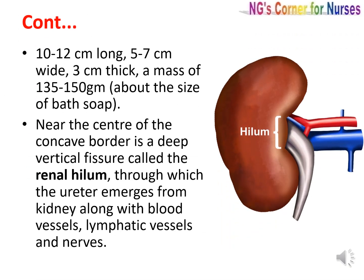The kidney is 10 to 12 cm long, 5 to 7 cm wide, and 3 cm thick, with a mass of 135 to 150 g — about the size of a bar of soap. Near the center of the concave border, there is a deep vertical fissure called the renal hilum, through which the ureter emerges from the kidney along with blood vessels, lymphatic vessels, and nerves.